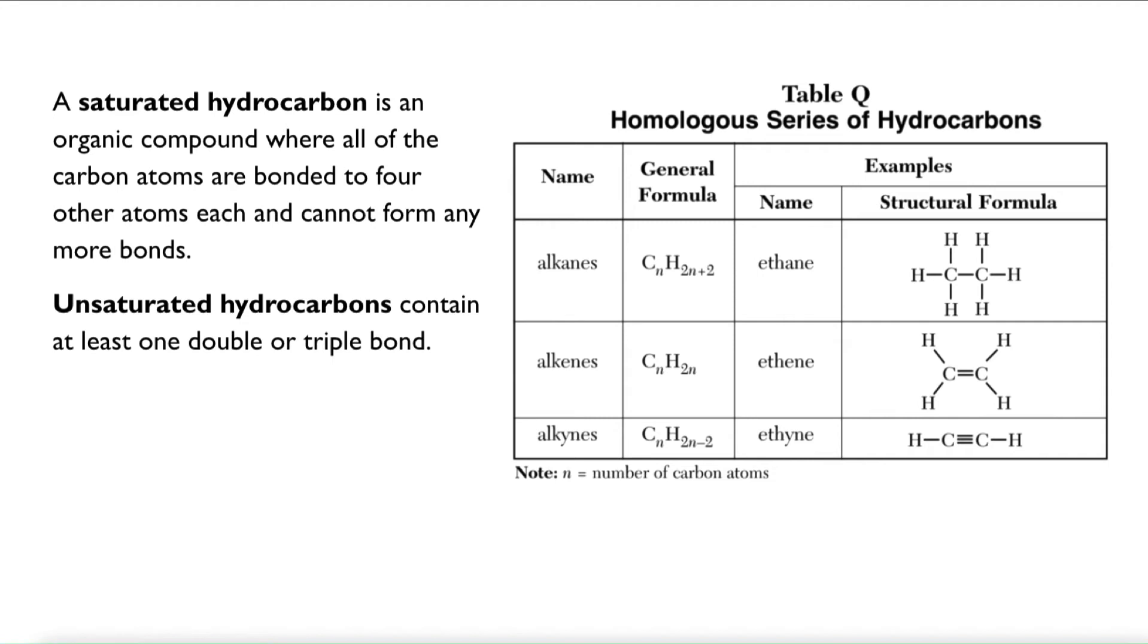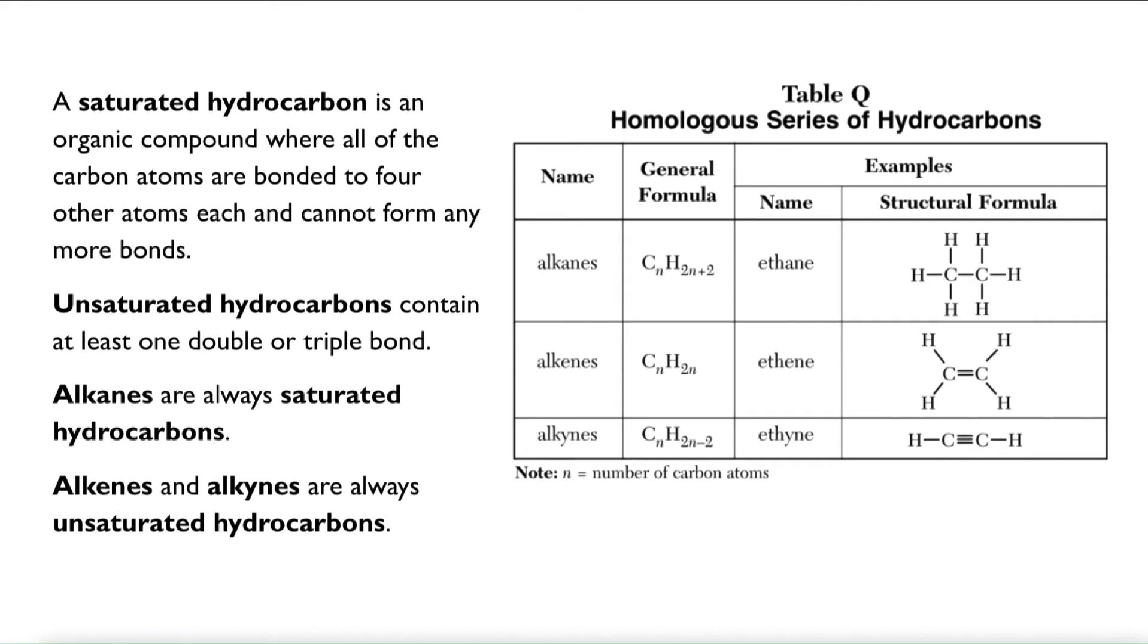So unsaturated hydrocarbons contain at least one double or triple bond. That's really the only difference. That means all alkanes always are going to be saturated because every carbon atom is single bonded to other atoms. Alkenes and alkynes are always unsaturated because you could always break that double bond and add one more atom bonded to each carbon atom or two more atoms bonded to each carbon atom in the case of a triple bond. So when we say saturated, we really just mean full. Is carbon already bonded to four other atoms all over the molecule? Let's do some practice.